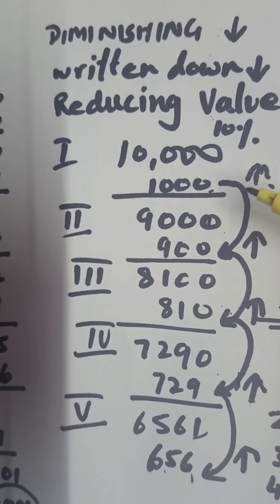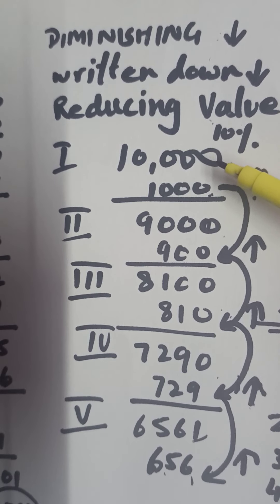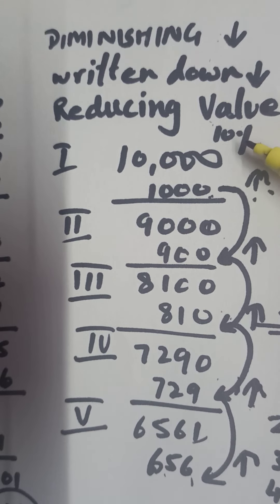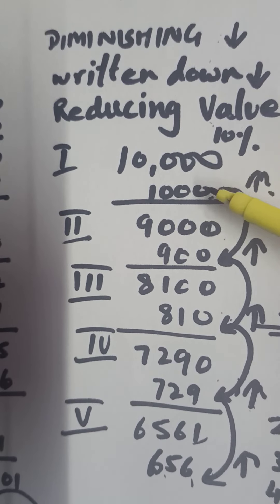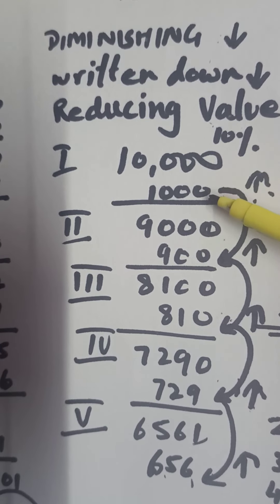How is it reducing? Because if 10,000 was the initial value when the asset was acquired, suppose it depreciates at 10%. The depreciation in the first year will be 10% of 10,000, that is rupees 1,000.